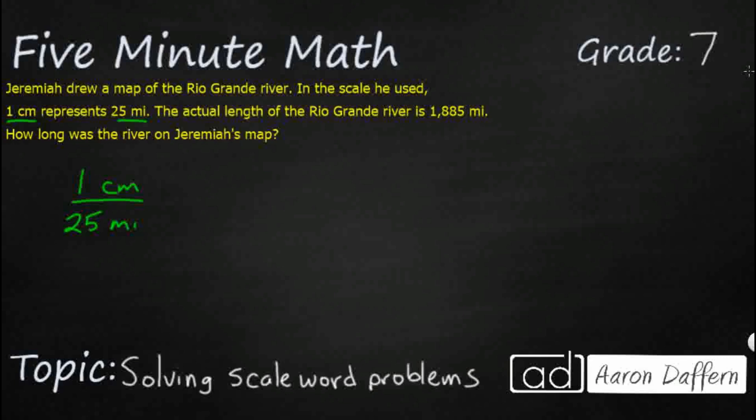The actual length of the Rio Grande River is 1,885 miles. So if we're going to make our proportion, we need to make sure we keep our like units either in the numerator or the denominator. So in this case, we've got miles in our denominator. Let's go ahead and put it down there. So how long was the river on Jeremiah's map? Well, remember Jeremiah is using centimeters, so that is our missing term here.